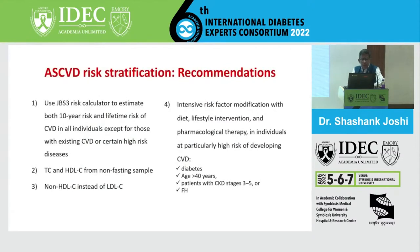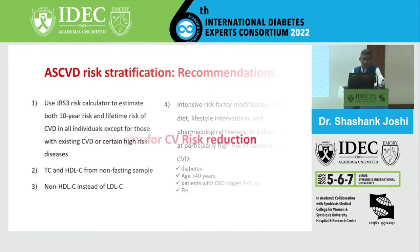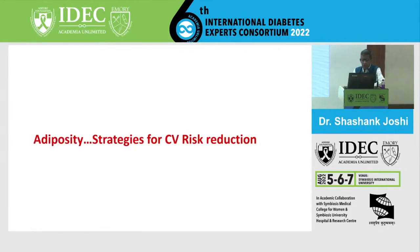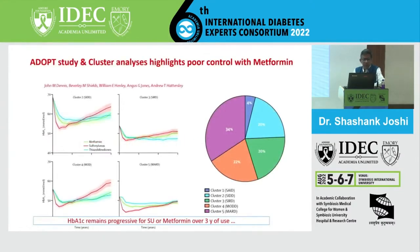When we look at recommendations for risk stratification, the JBS3 risk calculator to estimate 10-year residual risk still is pretty certain. Total cholesterol and non-HDL from a non-fasting sample can be used. Non-HDL instead of LDL may be more compelling. People at residual risk are diabetics above 40, probably with CKD and family history, and our own Asian ancestry - clearly there.